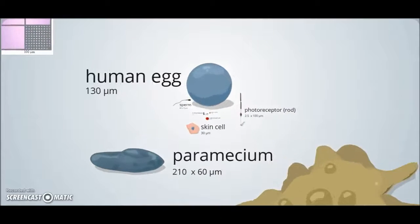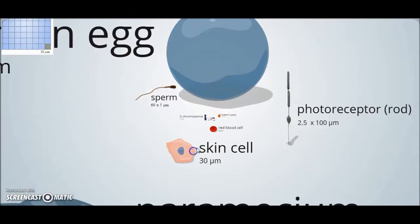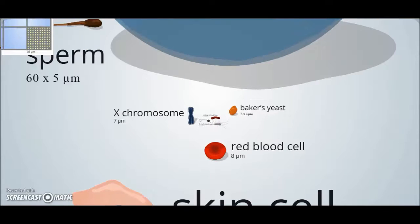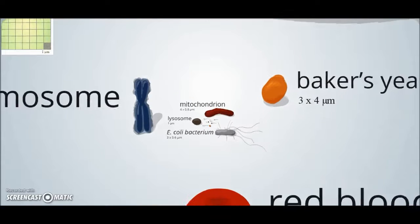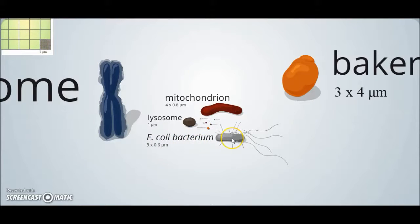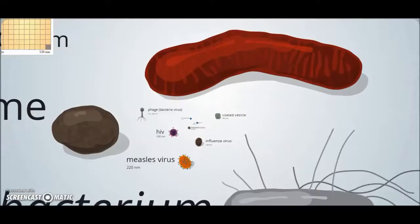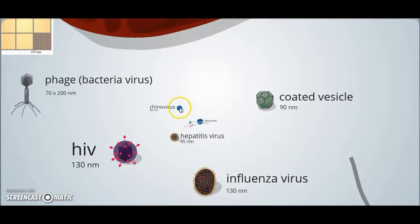Now we are approaching smaller scales. We see a cell with respect to a red blood cell, which is much smaller. Only at this point do we start to see the first bacteria. Here we have Escherichia coli, and we see this bacterium with respect to what is here — a virus — and the difference in size between these viruses.